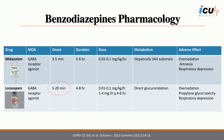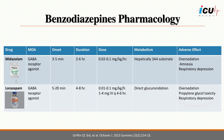Lorazepam has a longer time to onset and duration of action, as it is not as lipophilic as midazolam, which makes it a good choice in the initial treatment of status epilepticus. Lorazepam exhibits direct glucuronidation, so it can be used safely in patients with renal and hepatic dysfunction with minor side effects. Lorazepam is used as intermittent doses, and continuous infusion should not be used, as higher doses are associated with propylene glycol-related toxicity.